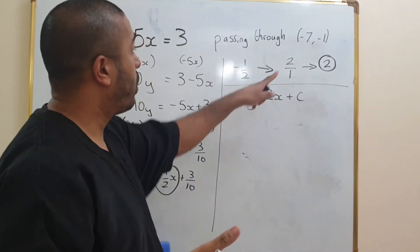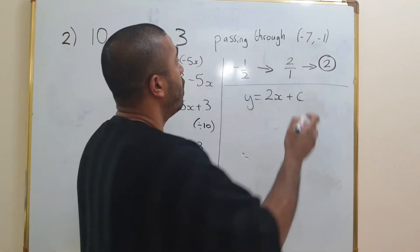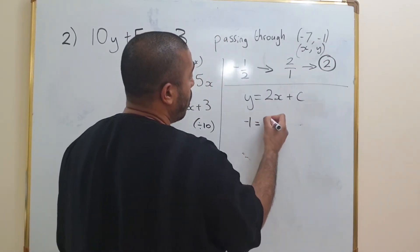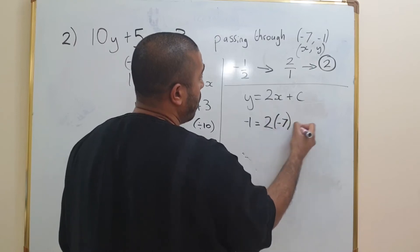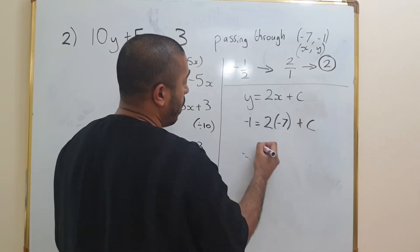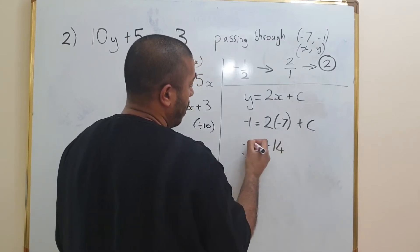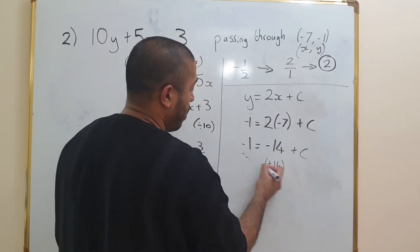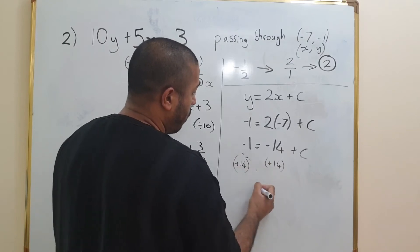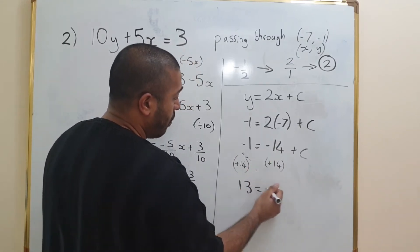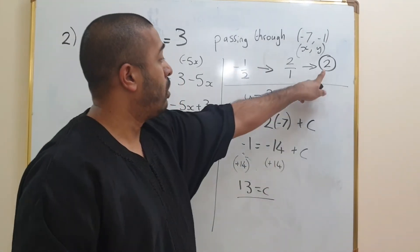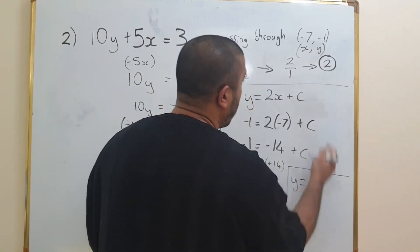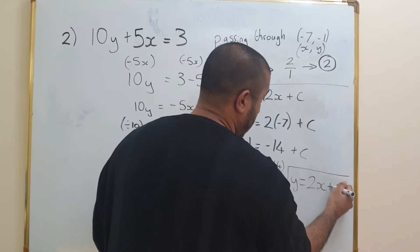We don't know the value of c yet. We need to plug in the values negative 7 and negative 1 as our x and y. So: minus 1 equals 2 times by negative 7 plus c, giving minus 14. So minus 1 equals minus 14 plus c. Adding 14 to both sides gives us 13 for the value of c. With gradient 2 and c equals 13, the final equation is y equals 2x plus 13.